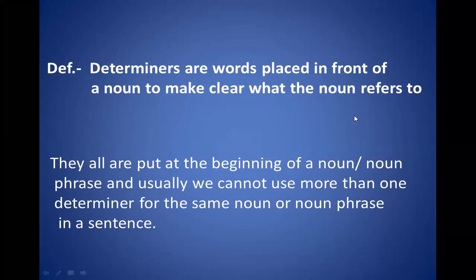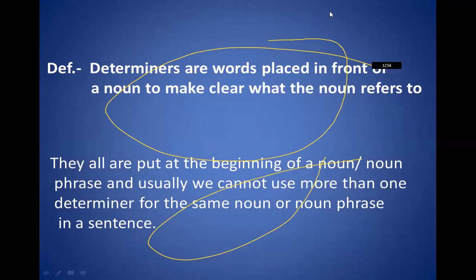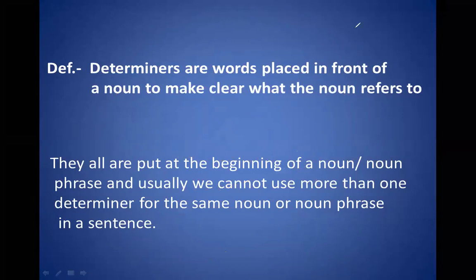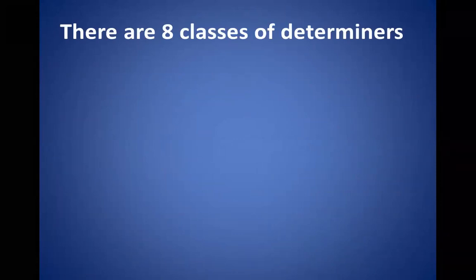Sometimes examiners put two determiners for the same noun in a sentence to create confusion for students, so you must be careful. We just need to make sure it does not cut our marks. There are eight classes of determiners that we need to see.